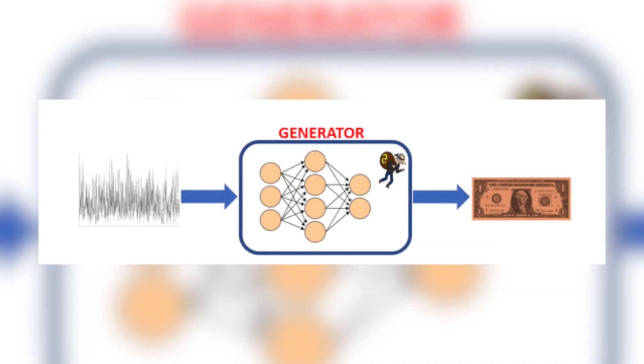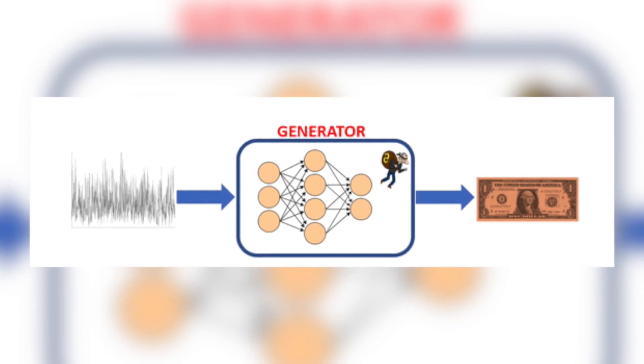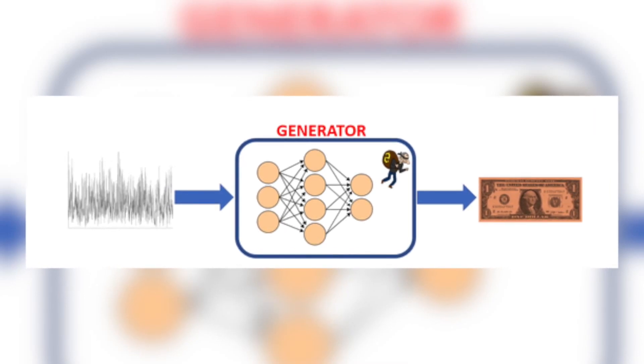Let's start with the generator first. The generator takes in a random noise signal and outputs certain images. The generator is trying to generate fake images that look like the real images — meaning the images that come from the training data. The objective of the generator is to try to fool the discriminator.